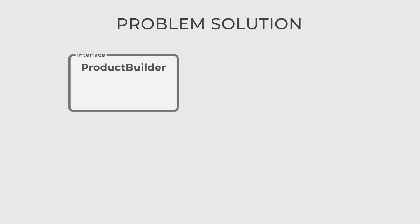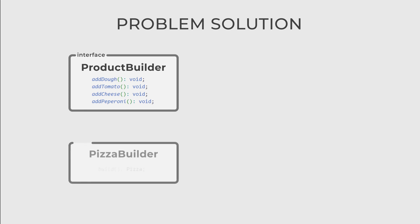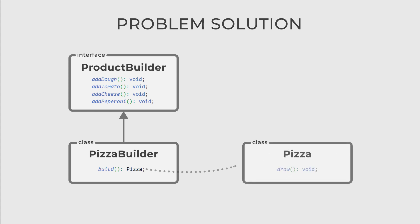Let's create a product builder that contains all the methods we can apply to a product. In our case, these are add dough, add tomato, add cheese, add pepperoni, etc. After that, we can create a concrete builder to implement the product builder interface — the pizza builder. It works with its specific product, pizza.